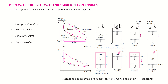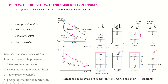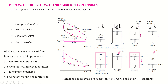In this video I will explain the Otto cycle, which is commonly used for spark ignition reciprocating engines. In this figure you can see the PV diagram for the Otto cycle. There are four strokes in the Otto cycle.